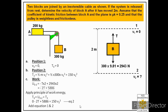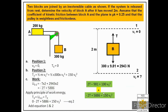We now have two equations — Equation 1 from block A and Equation 2 from block B — both with unknowns T and v₂. Adding the two equations cancels out the 2T terms, giving: 4905 = 250v₂². Solving this gives the velocity of block A after it has moved 2 meters as v₂ = 4.42 m/s. I hope this answer is clear. Thank you very much.